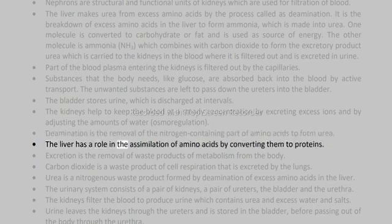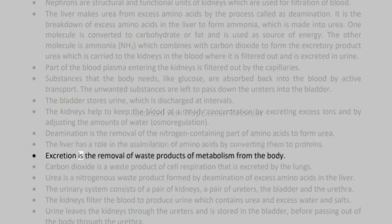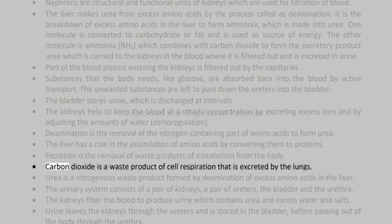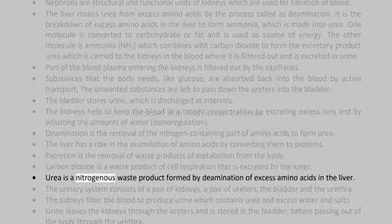The liver has a role in the assimilation of amino acids by converting them to proteins. Excretion is the removal of waste products of metabolism from the body. Carbon dioxide is a waste product of cell respiration that is excreted by the lungs. Urea is a nitrogenous waste product formed by deamination of excess amino acids in the liver.